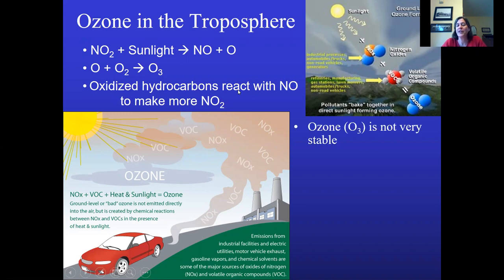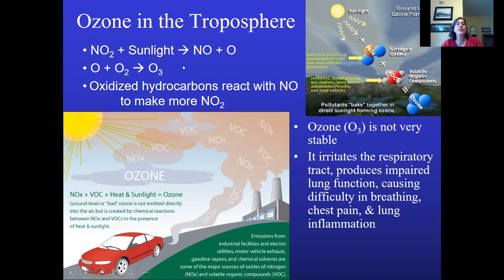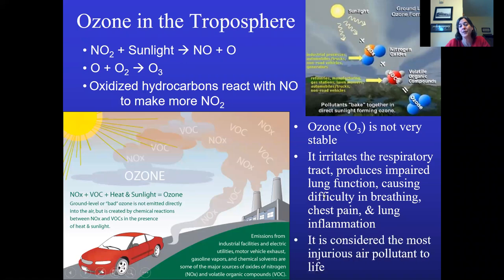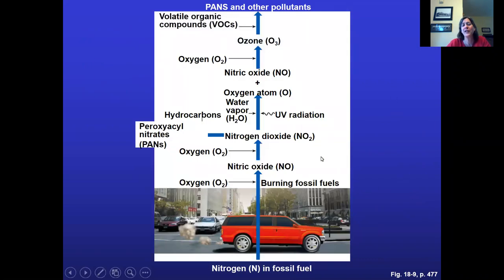Ozone is considered one of the most damaging things to life. Even in the stratosphere, ozone is constantly being produced and destroyed because it's not nearly as stable as oxygen gas. This is Miller's picture of the series of reactions that produce tropospheric ozone, which is then damaging. I have my own ozone stories growing up just north of Chicago, just south of the Wisconsin border.